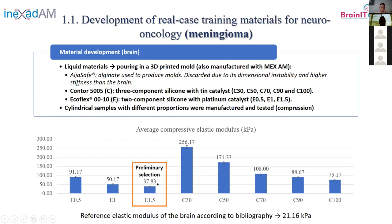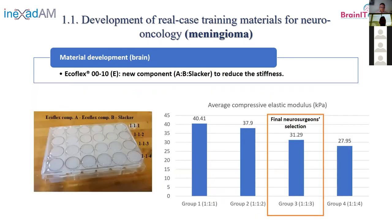We made a preliminary selection at around 37 kilopascals. After that, we decided to reduce the stiffness further. We were using the Ecoflex silicone, and the provider told us we could add another component called the slacker to reduce stiffness. We did different combinations — each row represents a different material with different replicas. Our neurosurgeons tested the cylinders, touched them, and finally selected the 1-1-3 combination: one part component A, one part component B, and three parts slacker. That was the final selection for the brain.